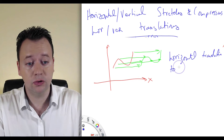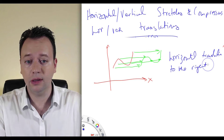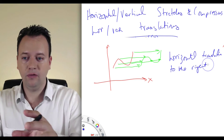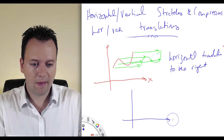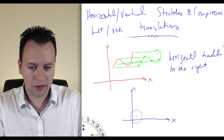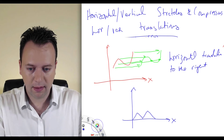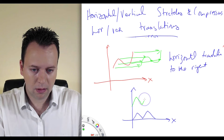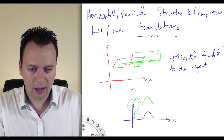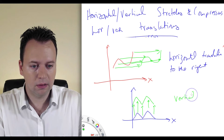You can also do a horizontal translation to the left — just pick up your graph, move it to the left, put it down. And similarly, if I start with a graph and move everything directly up, that's a vertical translation.